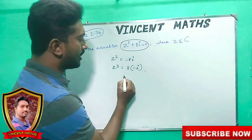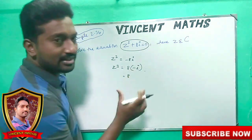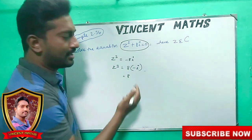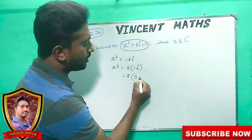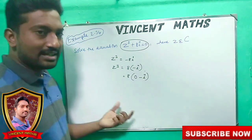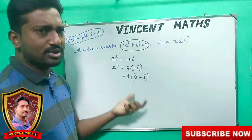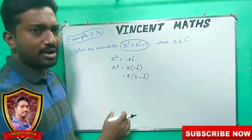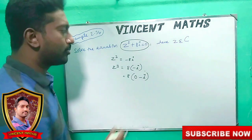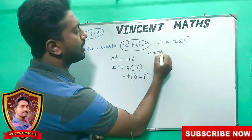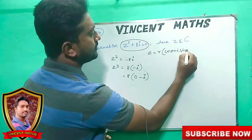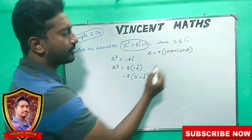So we write: 0 minus i. No real number — we put zero. Now, what do we do in polar format? Polar format is: r into (cos θ + i sin θ).